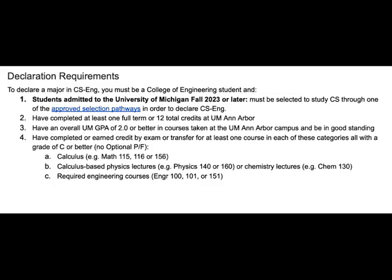In order to declare in CS Engineering, you must be a College of Engineering student, have completed at least one full term at U of M Ann Arbor, have an overall U of M GPA of 2.0 or better, be in good academic standing, and have completed or earned credit by exam or transfer for at least one course in each of these categories: Calculus (for example Math 115, 116, or 156), Calculus-based physics lectures (for example Physics 140 or 160) or chemistry lectures (for example Chemistry 130), and a required engineering course (for example Engineering 100, 101, or 151).